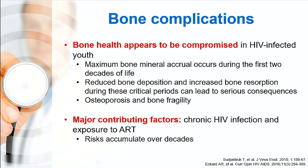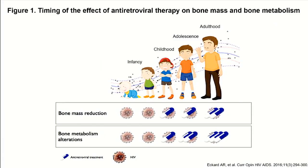The major contributing factors for bone complications among HIV-infected youth include chronic HIV infection and exposure to some specific types of ART, and this risk seems to accumulate over decades. ART may have an impact on bone mineral density or bone mineral accrual during the adolescence period, and that can compromise adult peak bone mass among these adolescents.